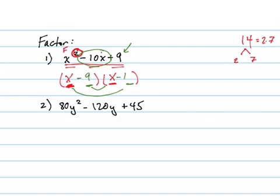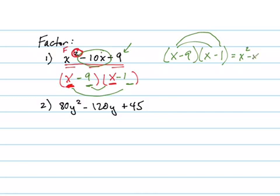Now let's check it. Let's foil it back out just to check, because remember, you can always check your answers. What's x times x? X squared. Good. What's x times negative 1? Negative x. What's negative 9 times x? Negative 9x. And what's negative 9 times negative 1? Positive 9. What do these two add up to? Negative 10x. There it is.